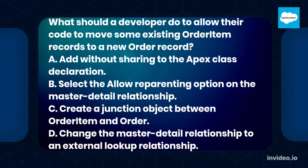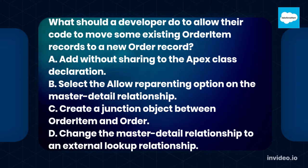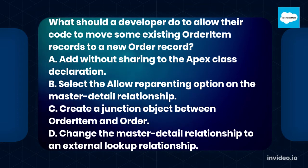A. Add without sharing to the Apex class declaration. B. Select the Allow Reparenting option on the master-detail relationship. C. Create a junction object between order item and order. D. Change the master-detail relationship to an external lookup relationship.